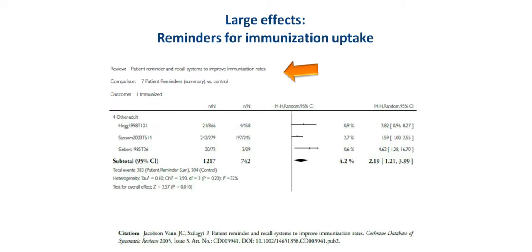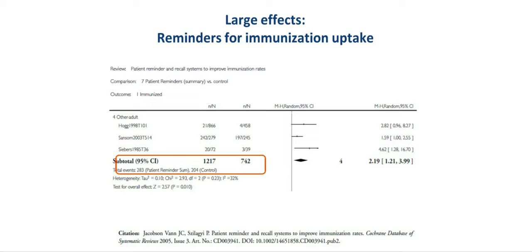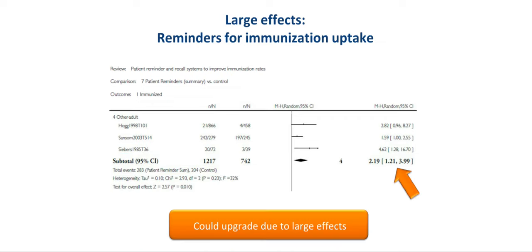This is an example from a Cochrane systematic review for large effects and when our confidence in estimates of effect is increased. The example deals with reminders for the uptake of immunization — specifically, patient reminder and recall systems to improve immunization rates. The authors identified three studies with approximately 1,950 participants and 487 total events, fulfilling the criteria for optimal information size. The estimate of effect is a relative risk of 2.19, with confidence intervals from 1.21 to 3.99. This type of evidence could, in theory, be upgraded based on the large effect observed, given no other considerations for downgrading.